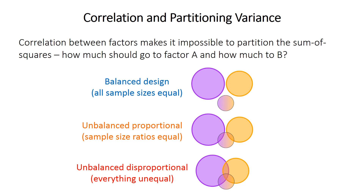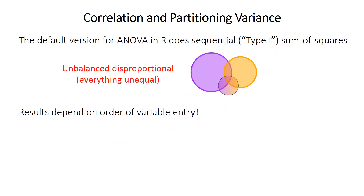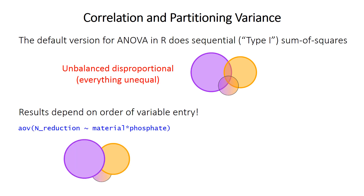One caution is that the default ANOVA functions in R partition the sum of squares in a sequential way — called type 1 sum of squares — which causes problems because results depend on the order variables are entered. Material is listed first, so it gets all of its sum of squares. Then phosphate gets its portion taking into account what was already used by material, and the interaction gets what's left over.